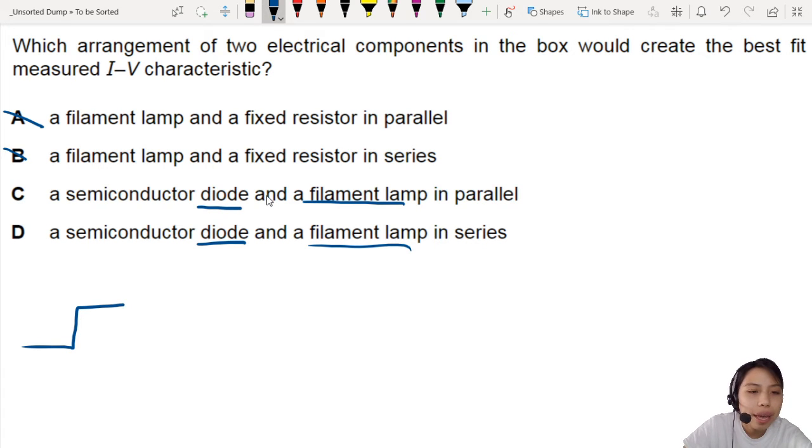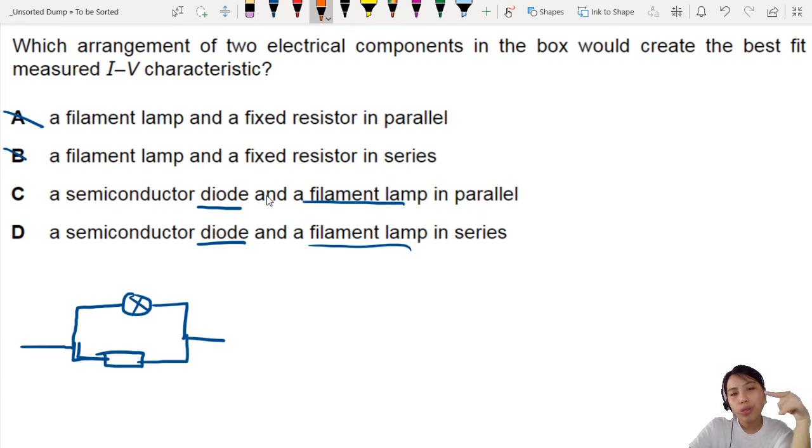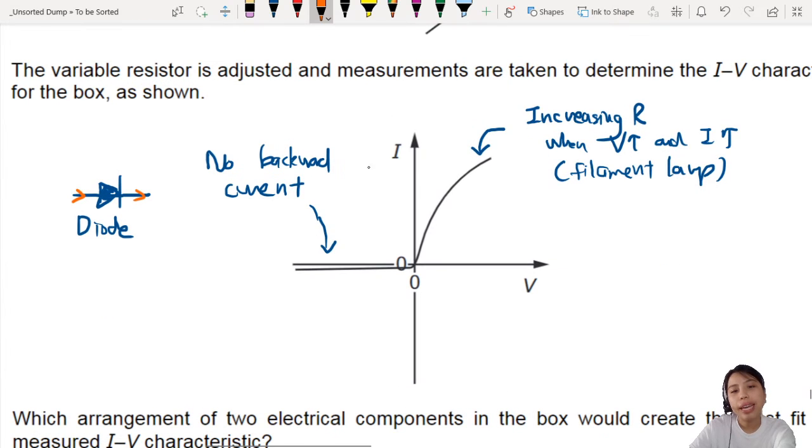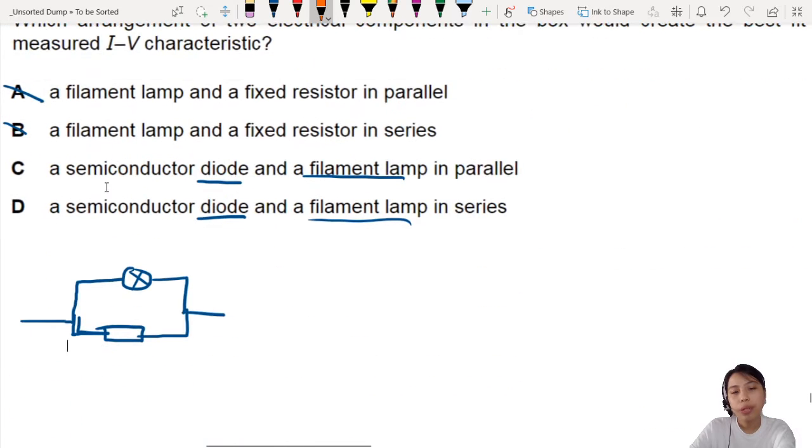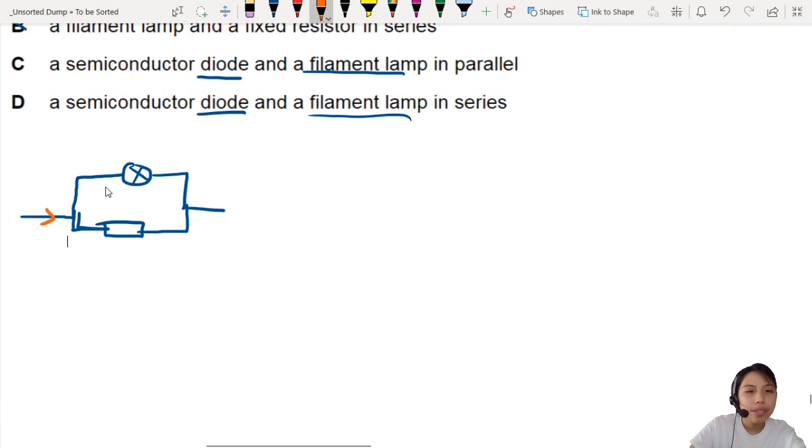So a filament lamp and resistor. Why is this wrong? First thing you need to remember is we mentioned there is no backward current. Which means if I send current this way, there is a reading. But if I change the direction of current and I send it backwards this way, it should not have a reading.